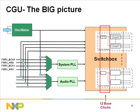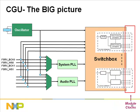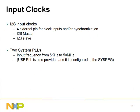Input clocks arrive from the I2S interfaces. Two system PLLs are provided; input frequency can range from 5 kHz to 50 MHz. A USB PLL is also provided and is configured in a system register module.